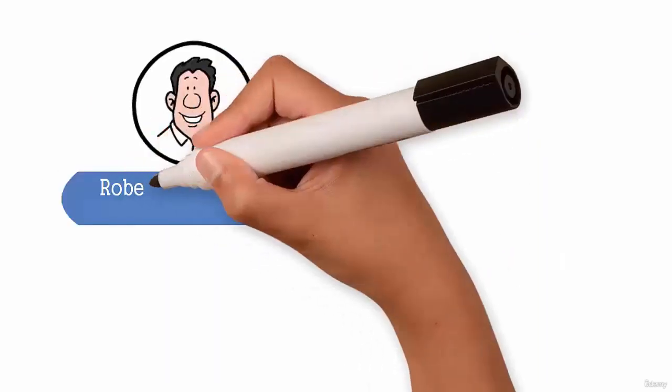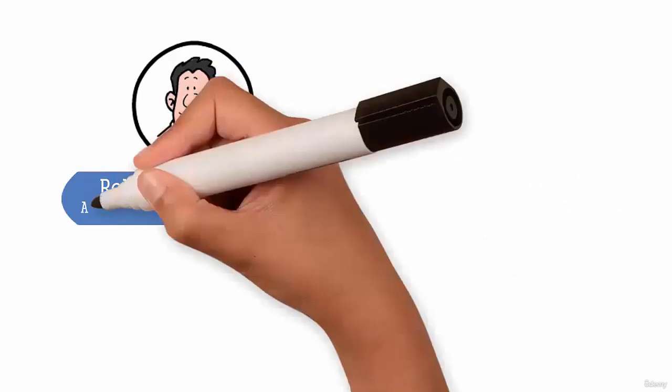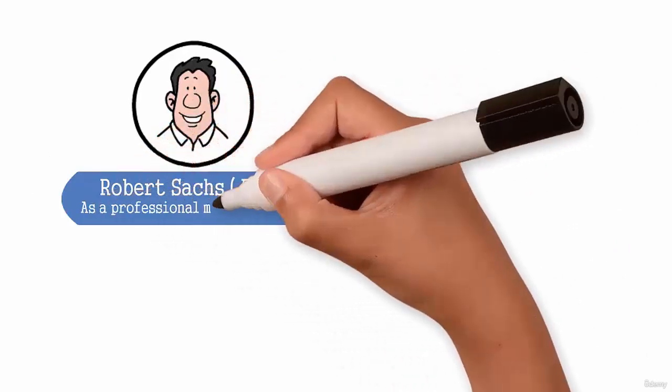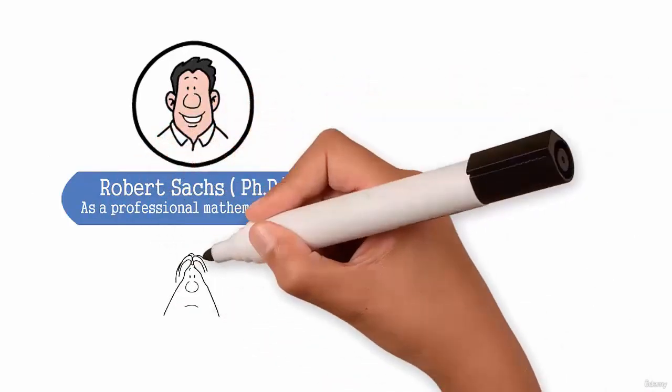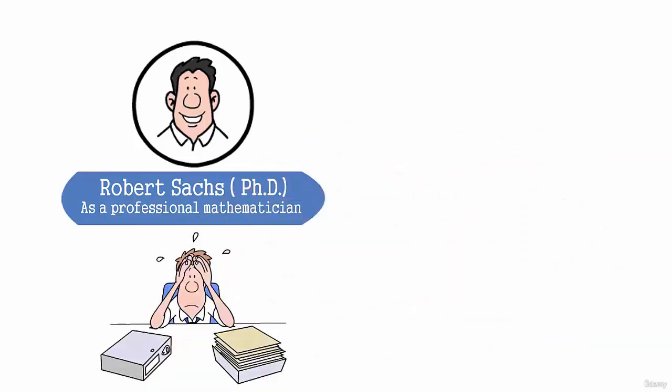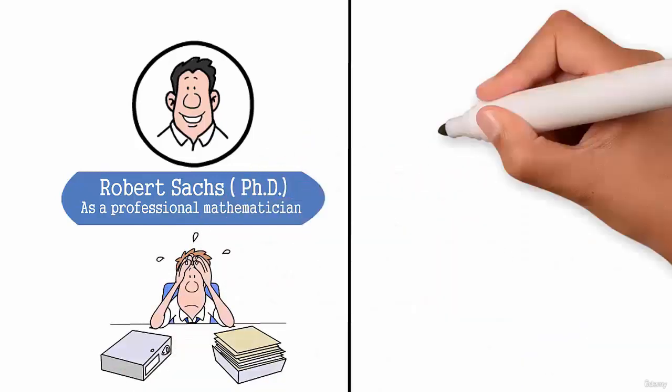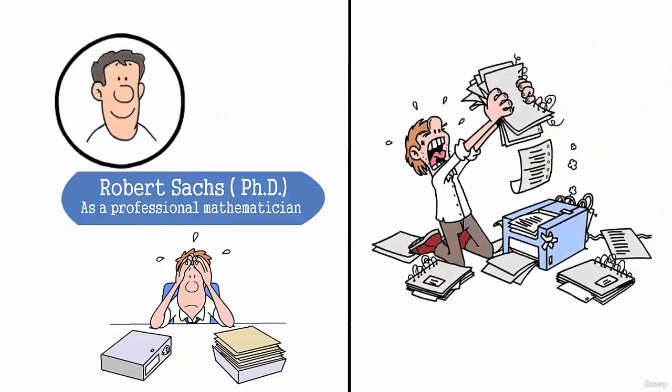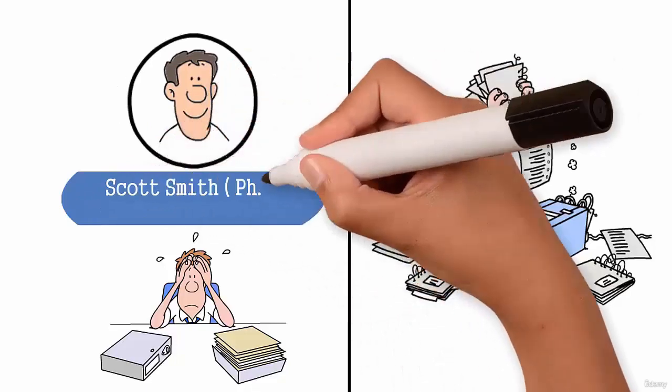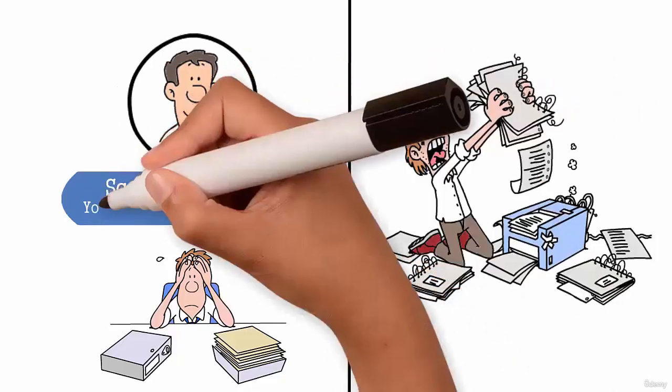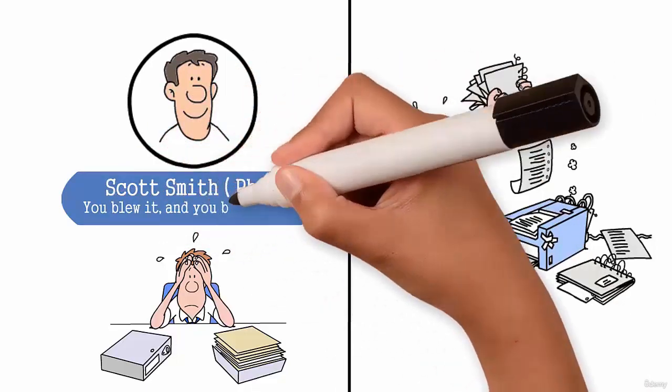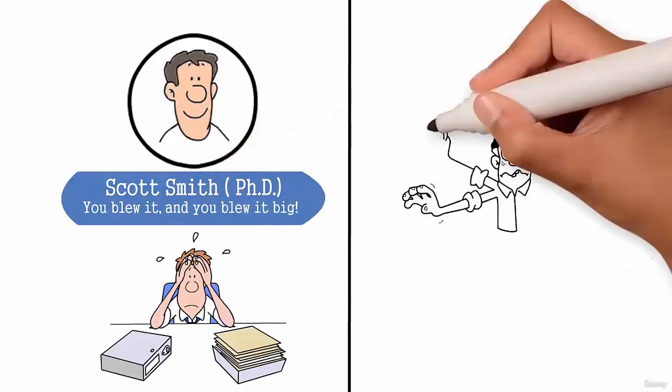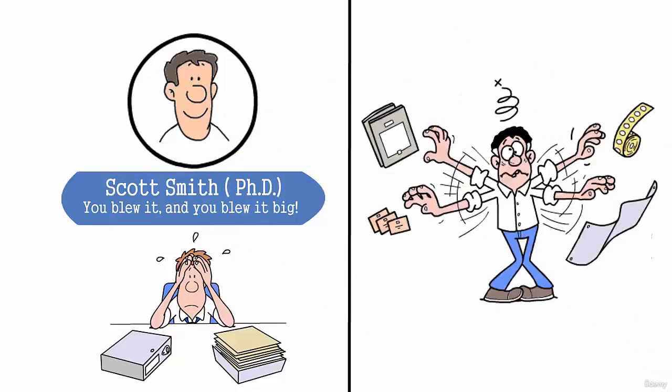Here are some examples from Robert Sachs, a PhD. He replied, as a professional mathematician, I'm very concerned with the general public's lack of mathematical skills. Please help by confessing your error and in the future being more careful. Scott Smith, also PhD: You blew it and you blew it back. Since you seem to have difficulty grasping the basic principle at work here, I'll explain.